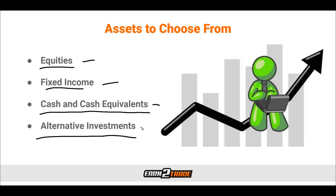Cash and cash equivalents include money market funds and short-term investments such as time deposits in a bank account. Money market funds are low-return assets that can be liquidated quickly to obtain cash, and due to their relatively lower risk, returns are relatively low in this category. Alternative investments have different risk and return characteristics from traditional stocks and bonds, and examples include futures and forwards, private equity, hedge funds, real estate, commodities, and even private credit.